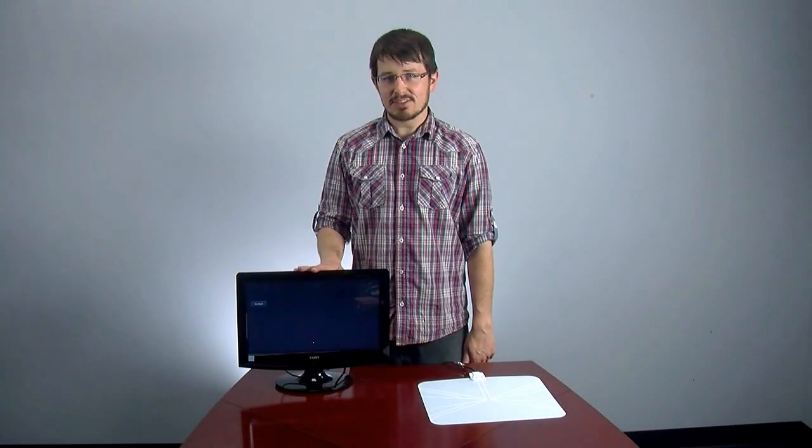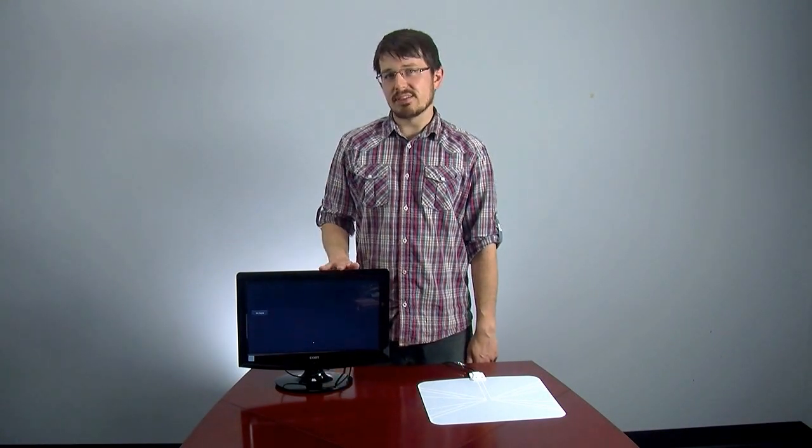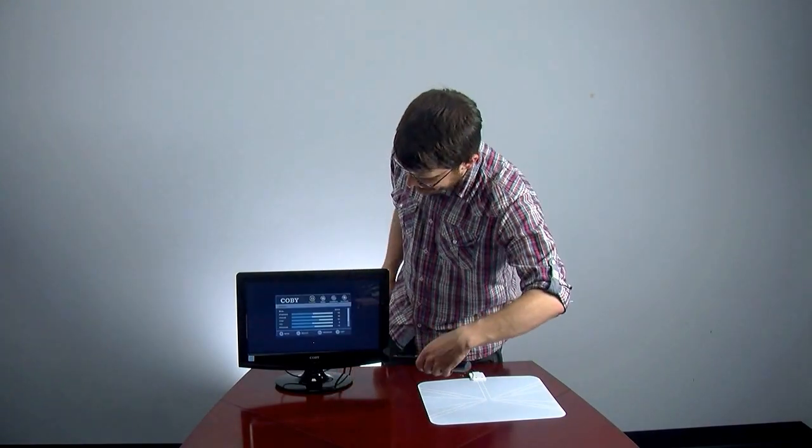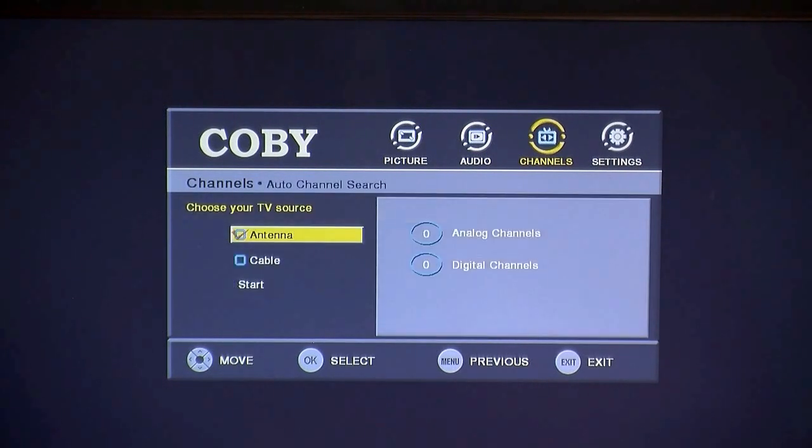Okay, we've got the TV hooked up to the antenna. Now, we have to do a channel scan. Every TV is different, but basically you go into the menu of the TV, and then find channels, and then there's an option called scan for channels, auto scan, or auto search.